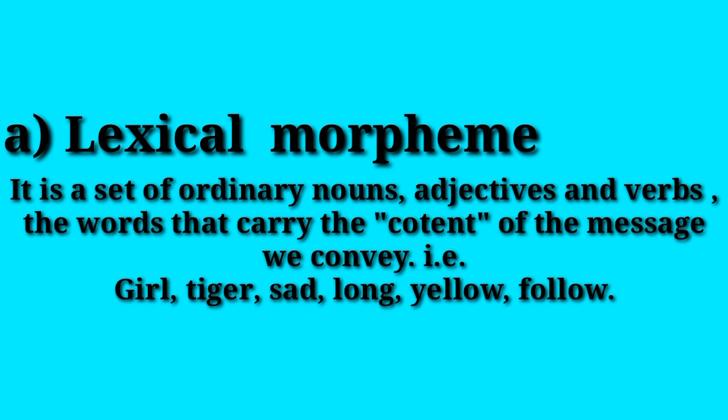For example: tiger, sad, long, yellow, fellow, open, sincere, look, house, man, etc. All nouns, adjectives, and verbs are lexical morphemes.